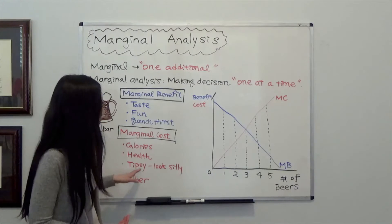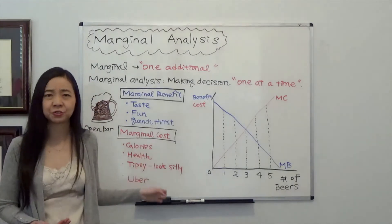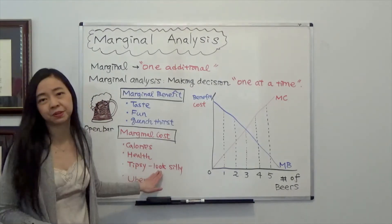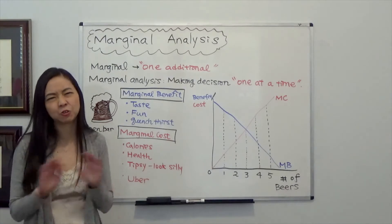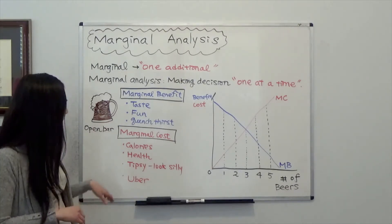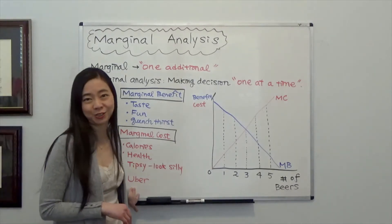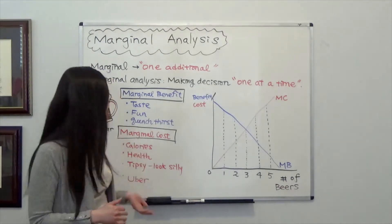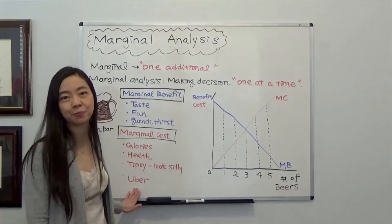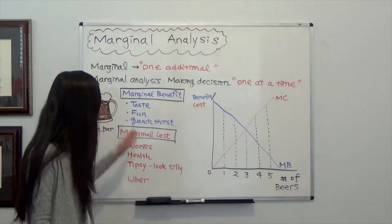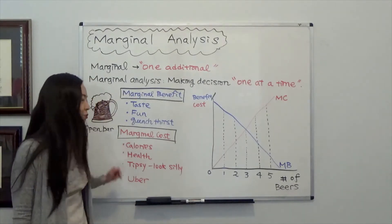And if you start to drink more, you're going to start to feel tipsy. And you're going to appear silly in front of your friends. And you don't like that. And finally, if you drink too much, eventually you cannot drive yourself home. You'll have to call Uber and you'll have to pay the Uber driver. So these are the marginal cost of drinking beer.